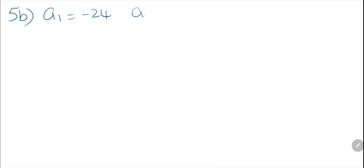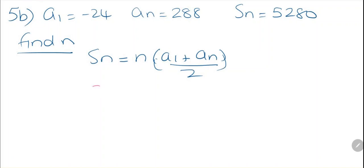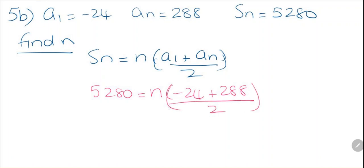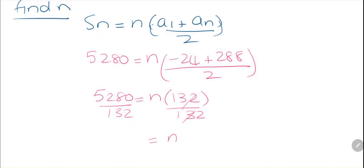For question 5b, we're given a1 = −24, the last term an = 288, and the sum is 5480. This time we don't know the number of terms, so we find n using the sum formula: Sn = n(a1 + an) / 2. Substituting: 5480 = n(−24 + 288) / 2 = n × 132. Dividing both sides by 132, n = 40.